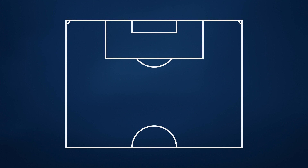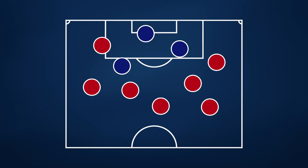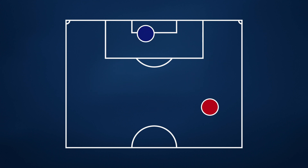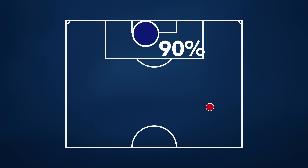It's the shot count that we naturally tend to look to for a gauge of who we think deserved to win, but not all attempts on goal are equal. XG ranks their quality, giving each a probability of being scored.